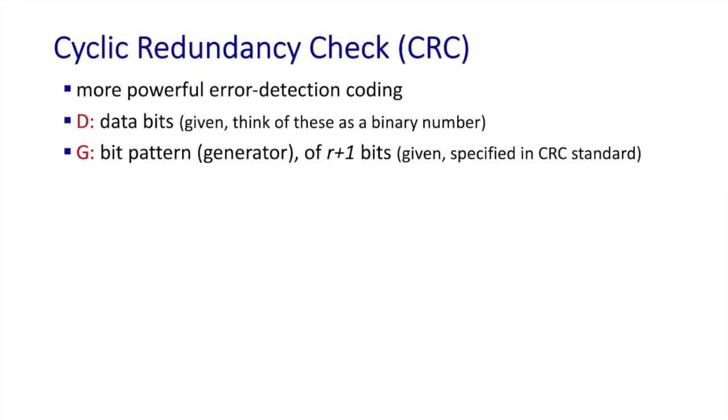So let's take a look at the cyclic redundancy check. Here again we have d data bits that we want to protect. A CRC has what's known as a generator G, which is a carefully chosen bit pattern of r plus 1 bits that's been standardized, agreed upon by all, since both the sender and the receiver will need to use the same value of G. The CRC-32 IEEE standard has a 32-bit generator.